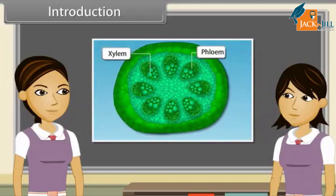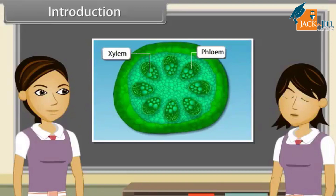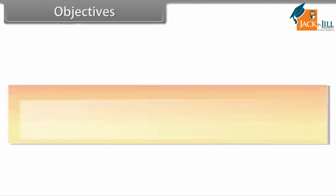Blood flows to transport oxygen, food, hormones and waste materials. In plants, xylem and phloem cells conduct food and water from one part to another. In multicellular organisms there is division of labor, meaning a particular function is carried out by a group of cells at a definite place in the body. This group of cells is called tissue, arranged and designed to provide efficient specialized function.